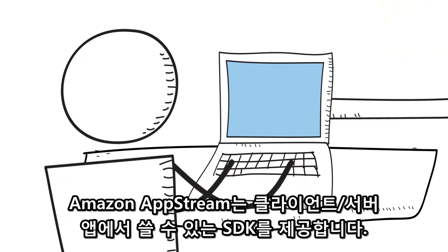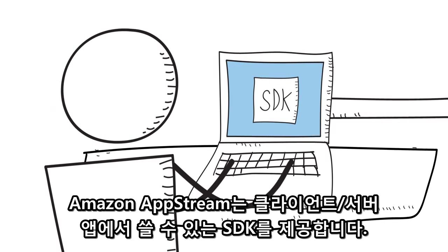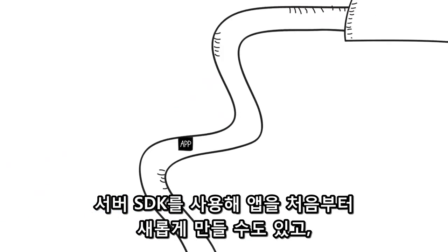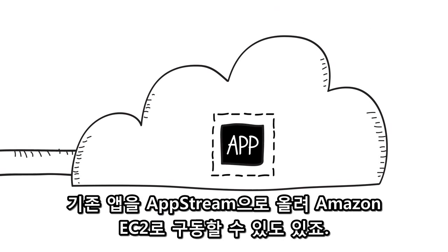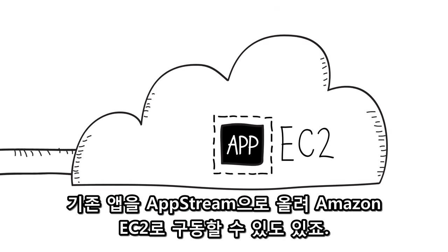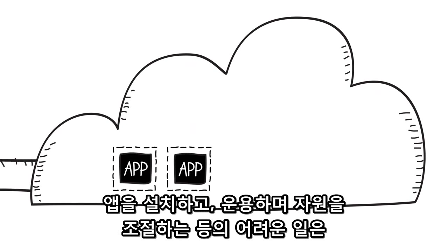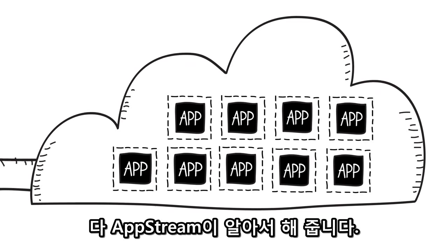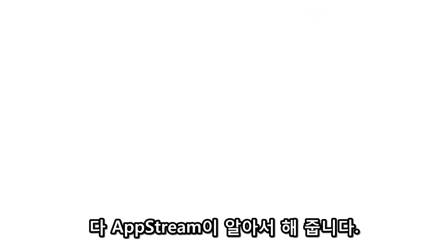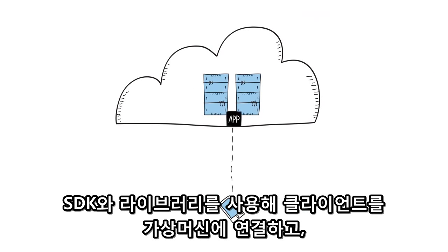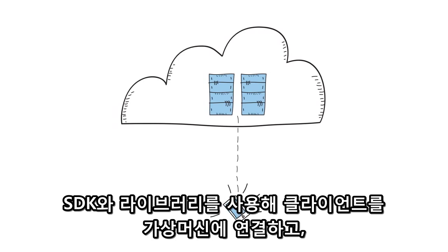With Amazon AppStream, you get simple SDKs for client and server applications. You can use a server SDK to build brand new applications, or to port your application over to AppStream, running on Amazon EC2 instances. AppStream does all the hard work to set up, operate, and scale your streaming applications. The SDKs and libraries make it easy to connect clients to virtual machines running your application.